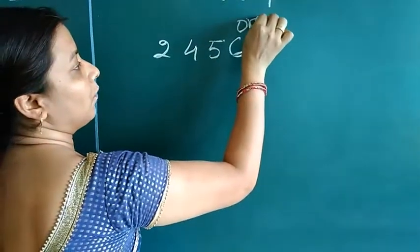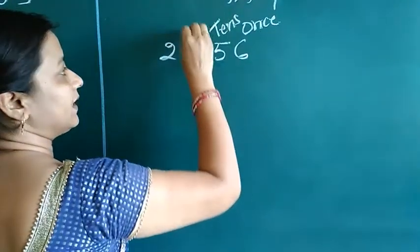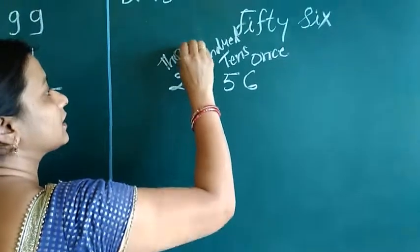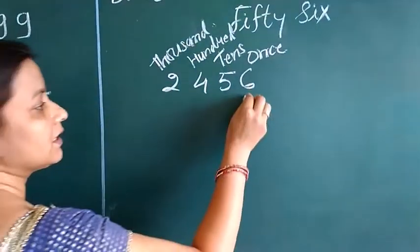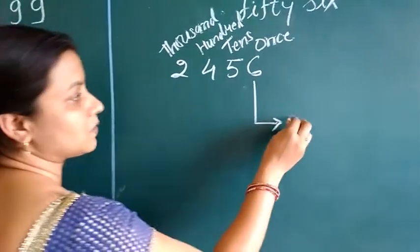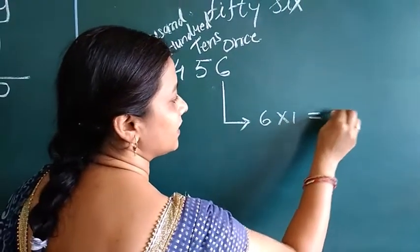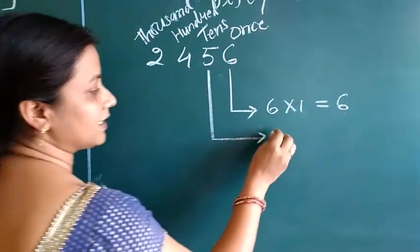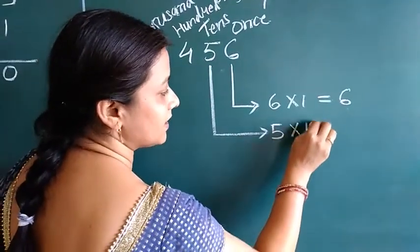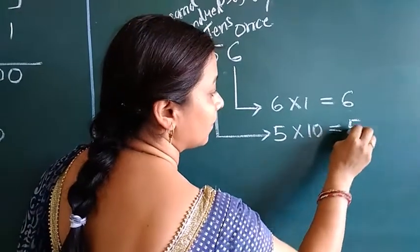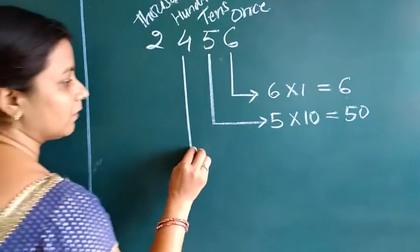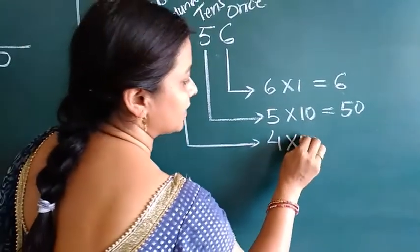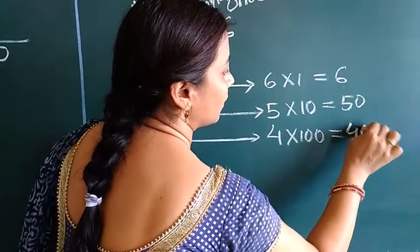So we identify: ones place, tens place, hundreds place, and thousands place. The place value of 6 is 6 × 1 = 6. The place value of 5 is 5 × 10 = 50. The place value of 4 is 4 × 100 = 400.